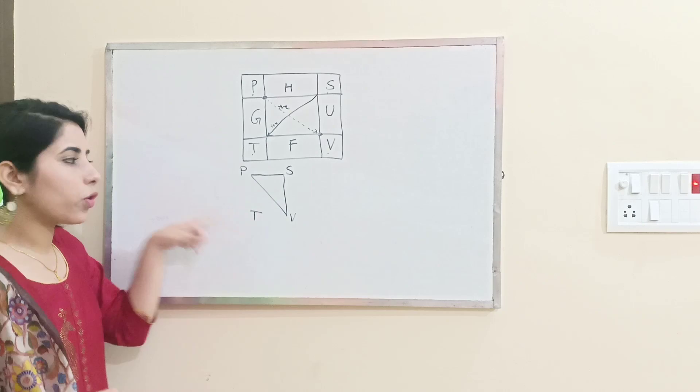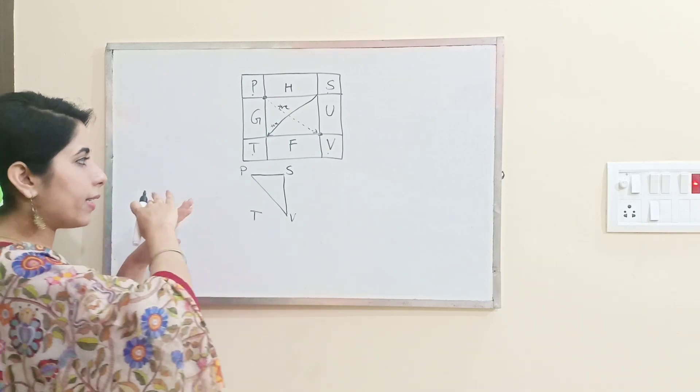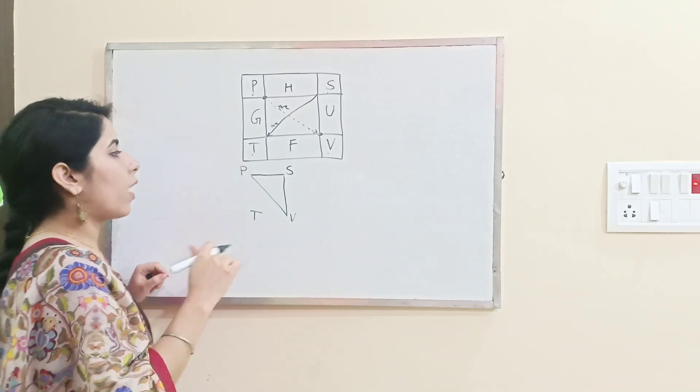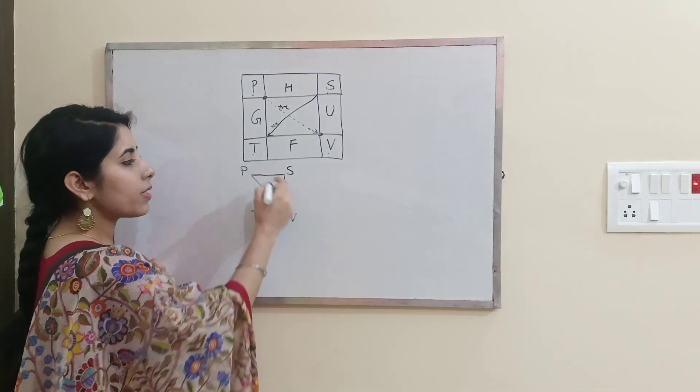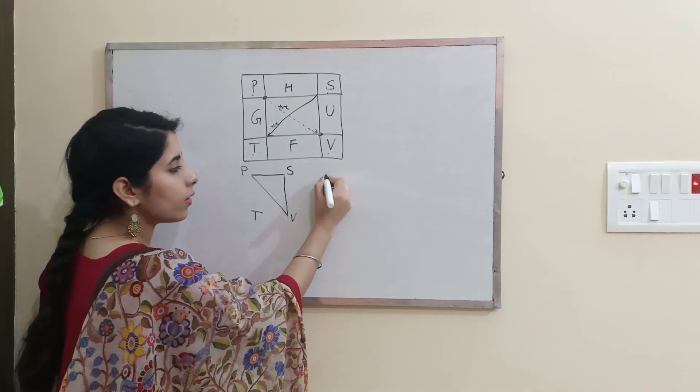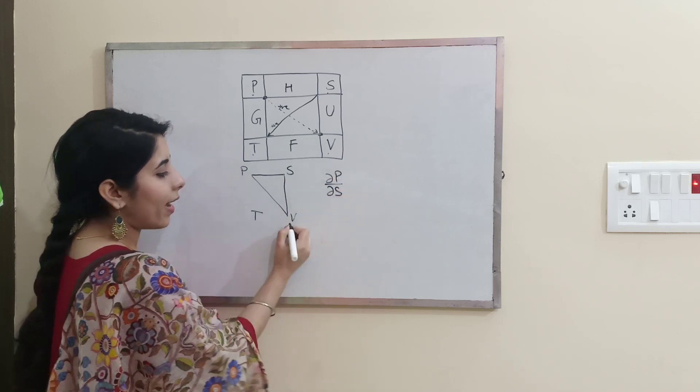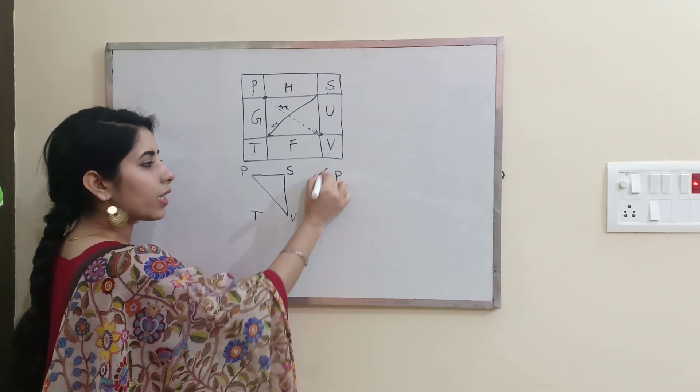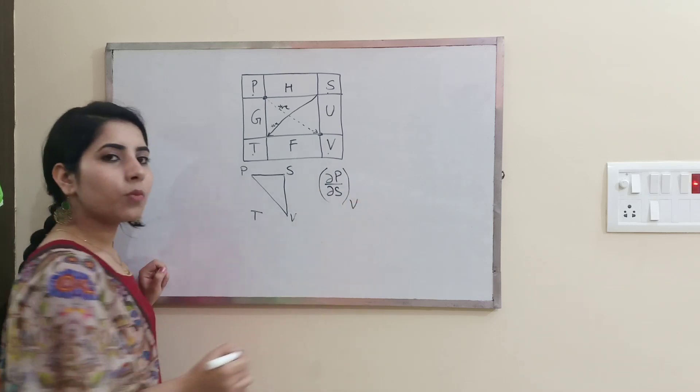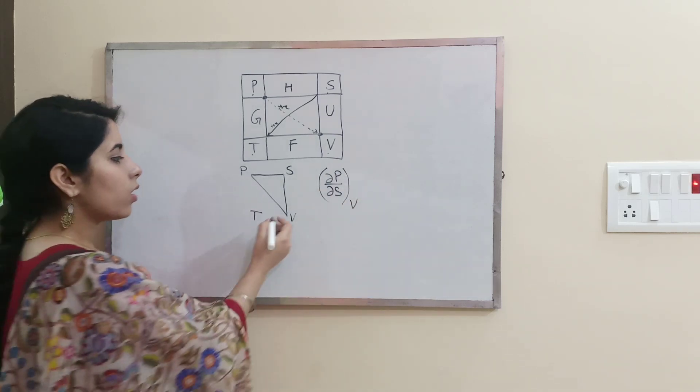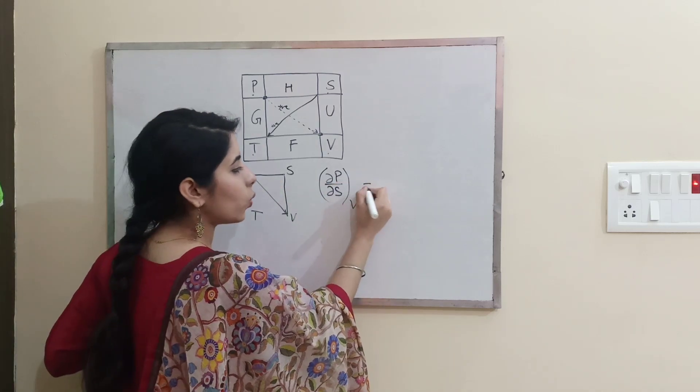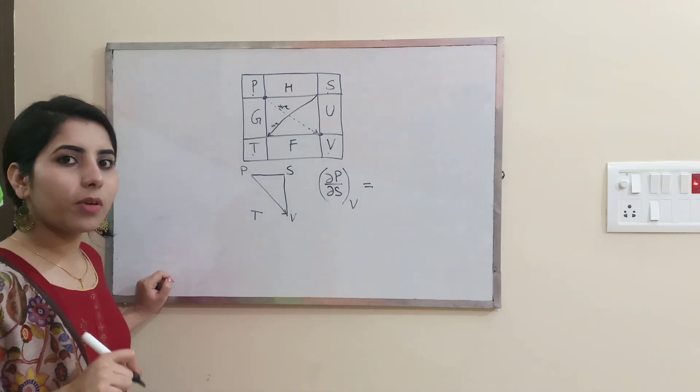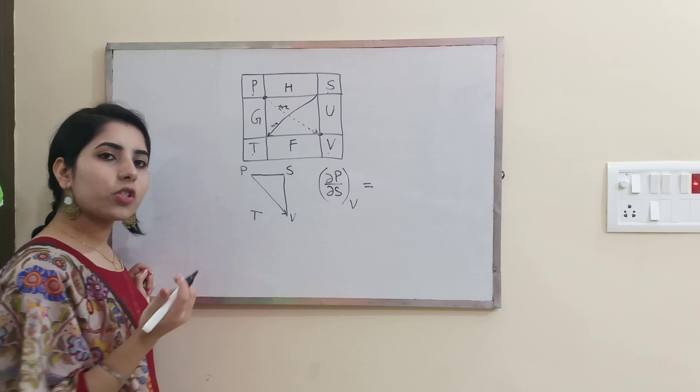First, you need to move in sequence P to S: del P over del S at constant V. You have moved from P to V, so it's gonna be positive. Next, equal to - for the next triangle, you need to consider the last point which you left earlier.